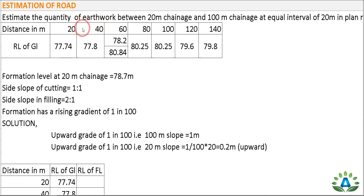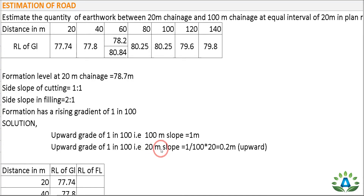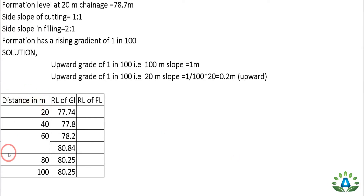The interval between chainages is 20 meters each — for example, 40 minus 20 equals 20, 60 minus 40 equals 20. We need to calculate the grade for a 20-meter interval, which is 1/100 × 20 = 0.2 meters. So for every 20-meter interval, the formation level rises by 0.2 meters. Let's start by making a table.